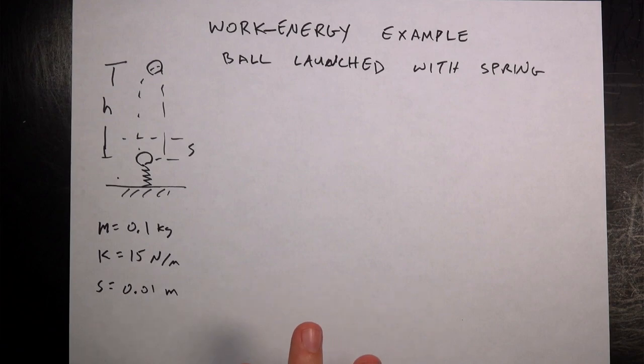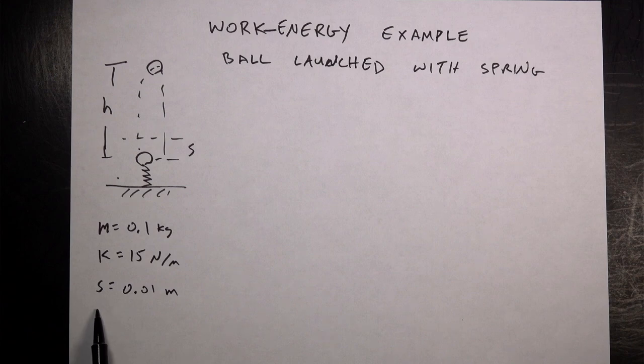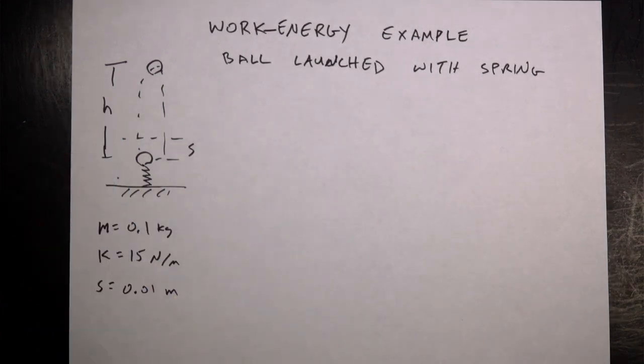I picked some values here. It doesn't really matter. We'll use these at the end. It's 100 gram mass, so 0.1 kilograms. The spring constant is 15 newtons per meter. And then this compression distance is 1 centimeter or 0.01 meters. And I want to know how high it goes.